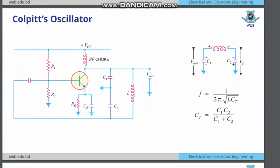We move on to the next oscillator — the Colpitts oscillator. It is quite similar to the previous one, but there are certain changes. There is no capacitor used in the tank circuit part; instead, a capacitor gang has been used. There is a tank circuit on the positive feedback path — here you can see the positive feedback path.